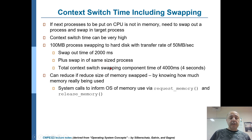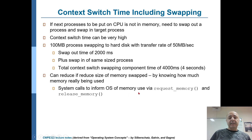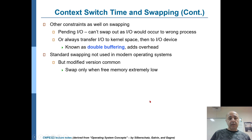You can reduce the size of memory swapped by knowing how much memory is really being used. System calls can be used to inform the operating system by making use of the request memory and release memory functions.